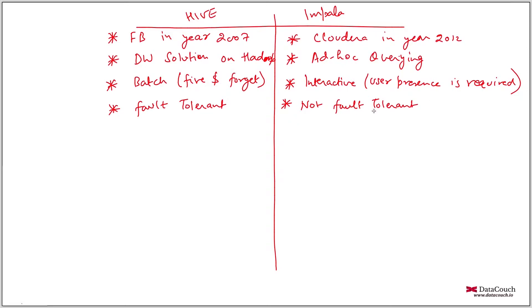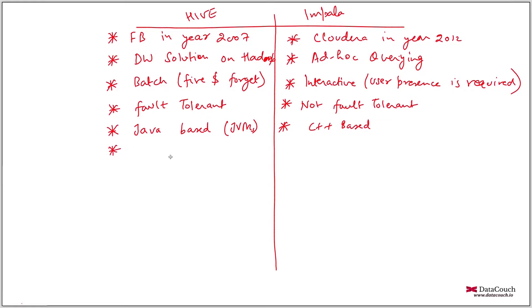That's why Impala is for interactive queries where user presence is required. Hive is Java-based — you will see JVMs getting created, and Java is a prerequisite before Hive can be installed. Impala is C++ based, which is a system programming language. Performance is better with Impala because it is closer to hardware and there is no garbage collection overhead.